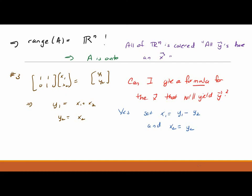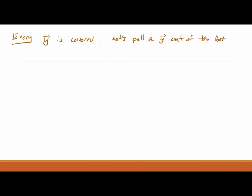Well yeah, I can do this. It's x1 equals y1 minus y2 and x2 equals y2. It's a simple math that you used to enjoy back in high school. So then given an arbitrary y, we've got an x such that ax equals y. That's the definition of onto. That with any arbitrary y, I've got a formula for the x to give me that y. Every single y is covered.